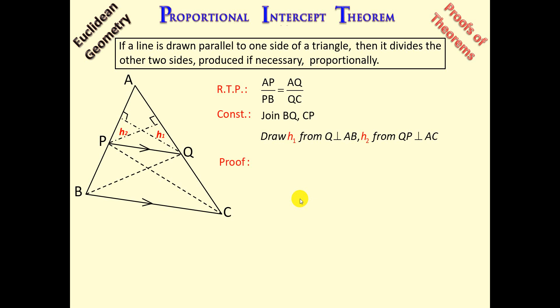So we're ready to start with our proof. We're going to work on our left-hand side, and remember what we're trying to prove: AP over PB. So we're going to take triangle APQ and we're going to look at triangle PBQ. So triangle APQ over triangle PBQ.